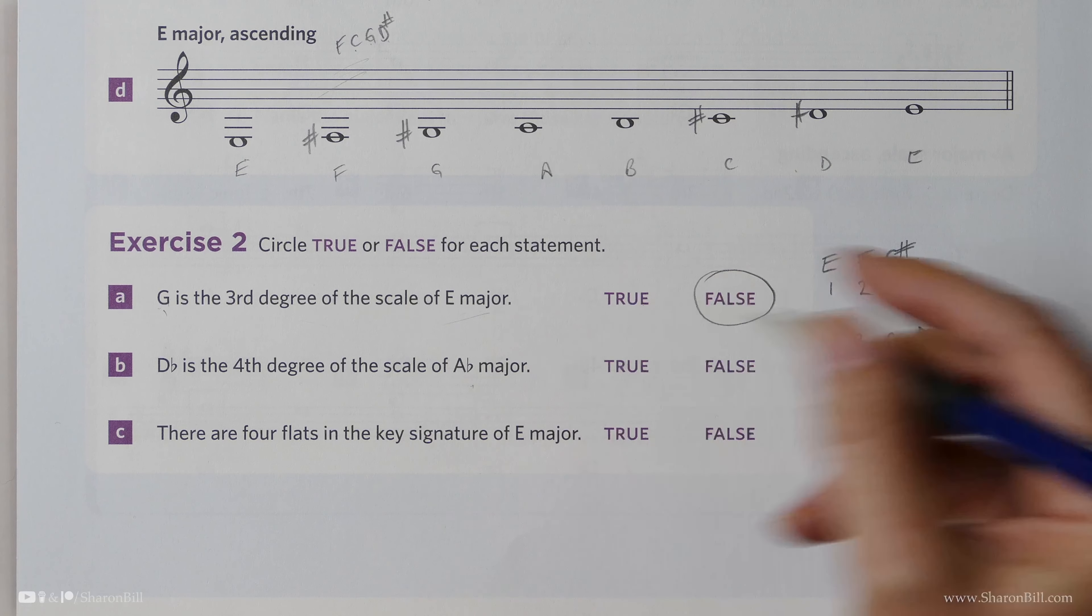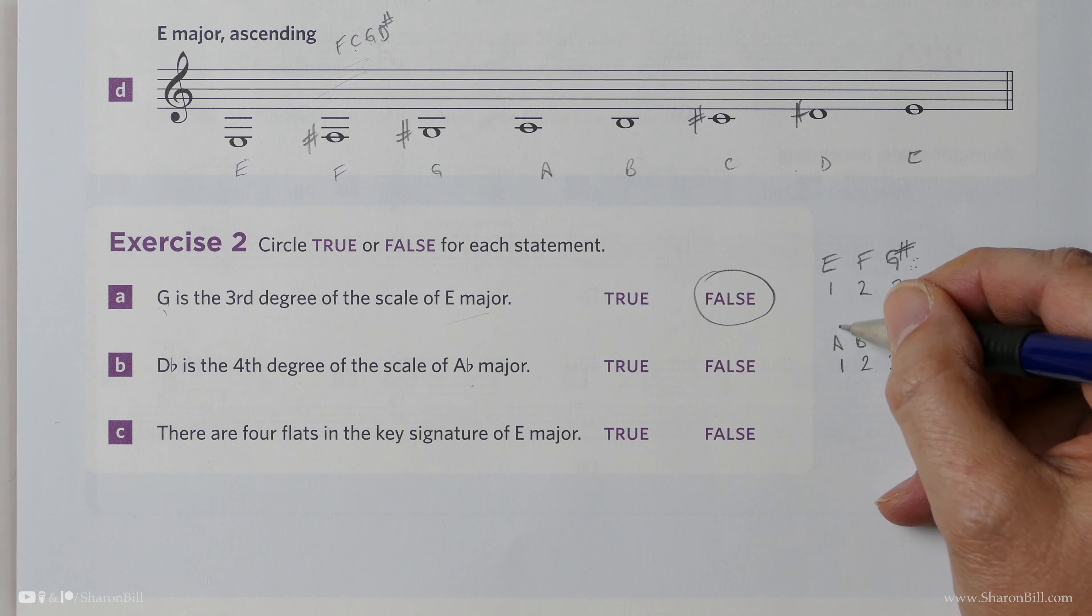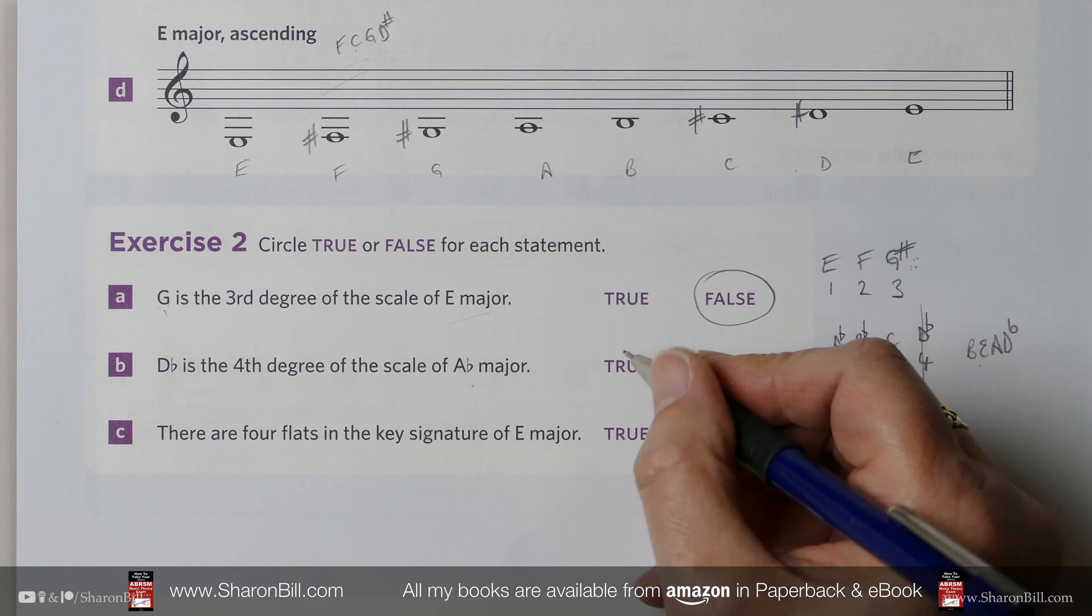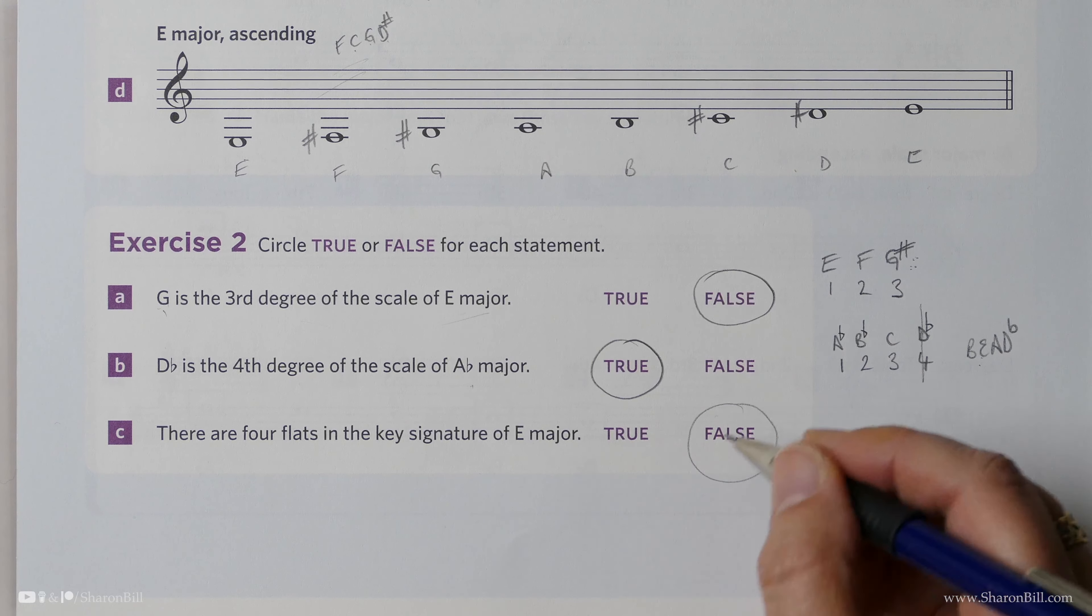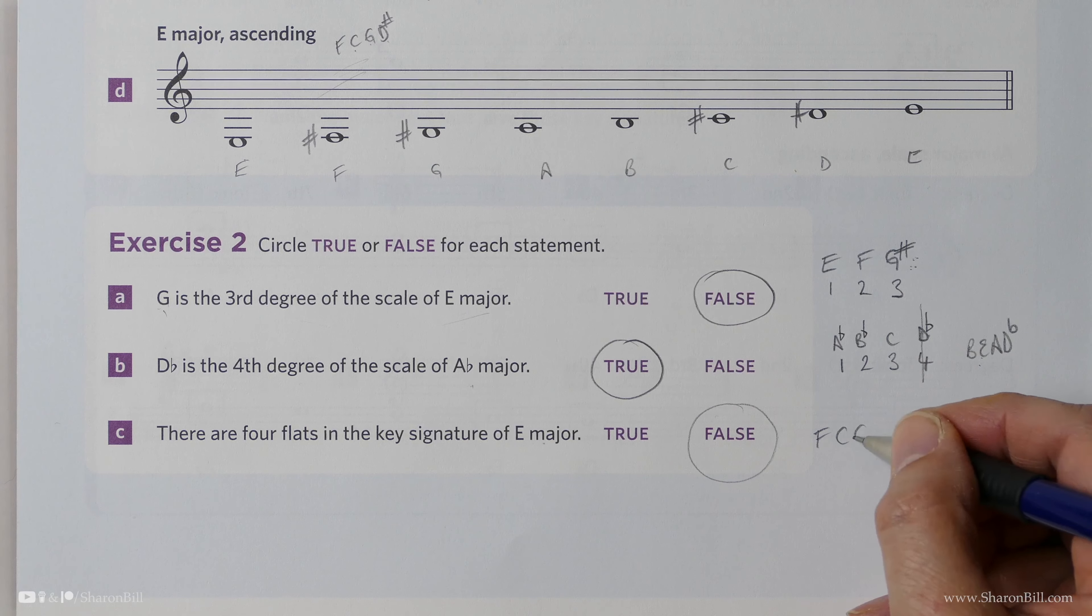Is it true or false that D-flat is the fourth degree of the scale of A-flat major? So let's think about this. 1, 2, 3, 4—A, B, C, D. Now, of course, it's A-flat major. And so we know that A-flat major should have a key signature of B-flats, E-flats, A-flats, D-flats. And so, of course, we need an A-flat, we need a B-flat, and we need a D-flat. So there we can see that the fourth degree of the scale is, in fact, D-flat. And so that's true.